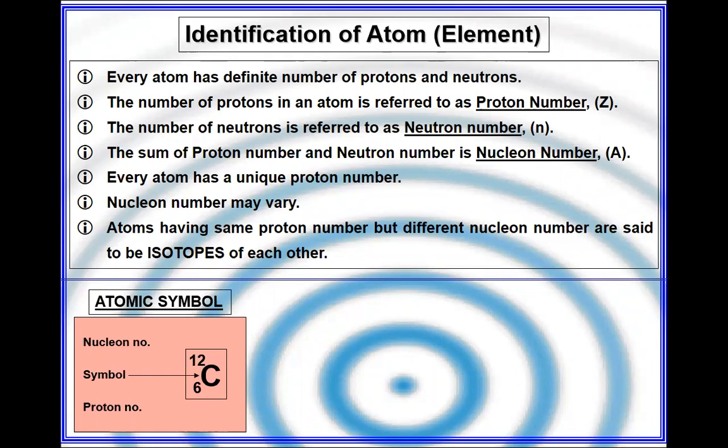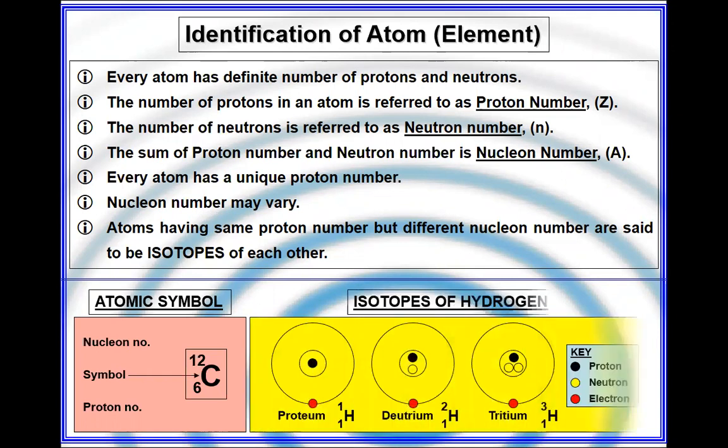Isotopes are atoms with the same proton number but different neutron number. These are the isotopic formations of hydrogen as an example.